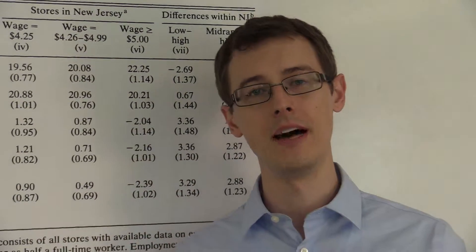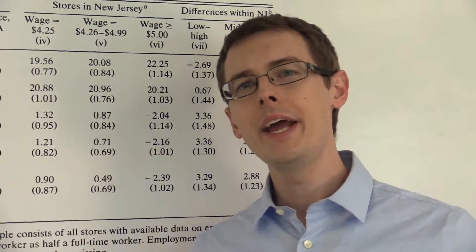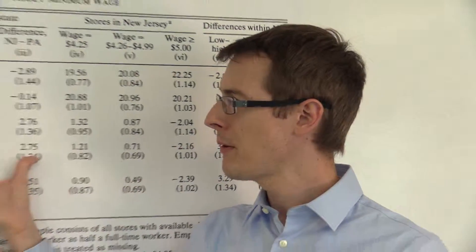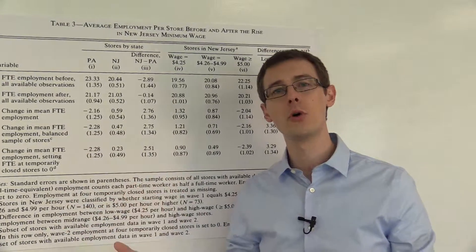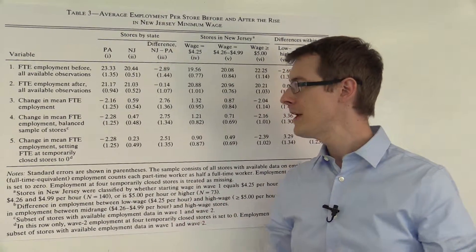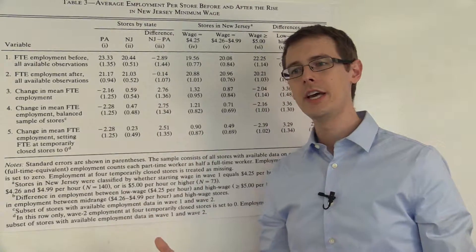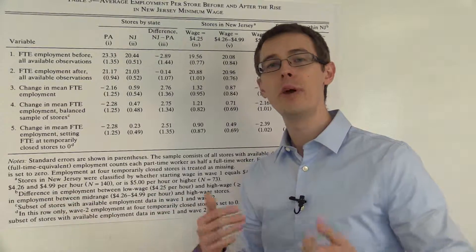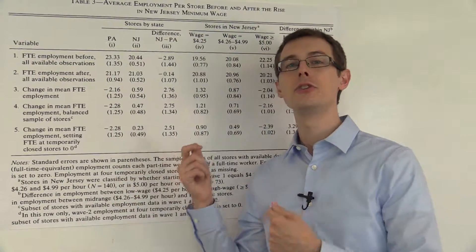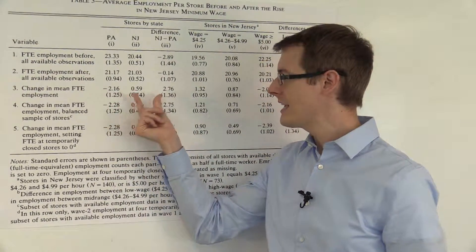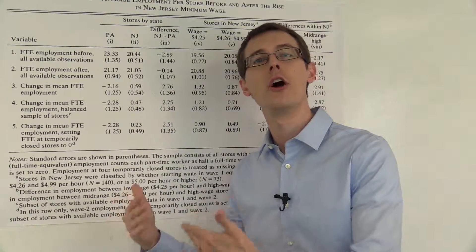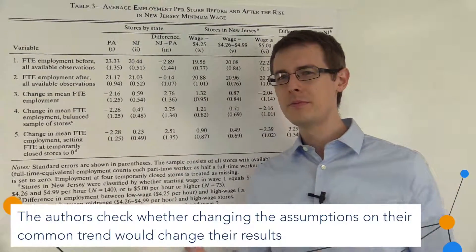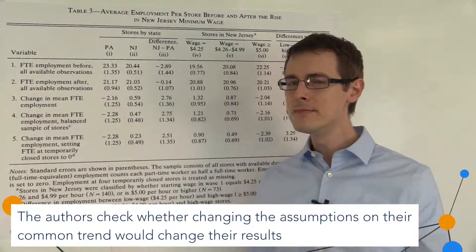Why would they do that? Well, remember, one of the main assumptions in difference-in-differences analysis is the common trends assumption. Over here, we were using Pennsylvania as our control group. We were saying that if the minimum wage law had not been passed in New Jersey, the trend in employment from Pennsylvania would have been the trend in employment in New Jersey. That's how we get the counterfactual for what would have happened if the law hadn't been passed. So is Pennsylvania really that similar to New Jersey? Maybe not.